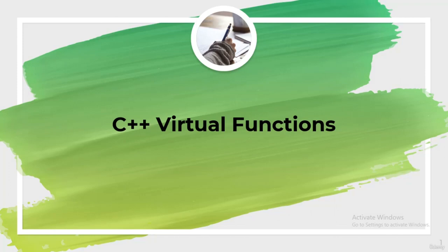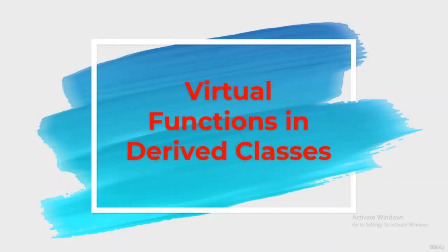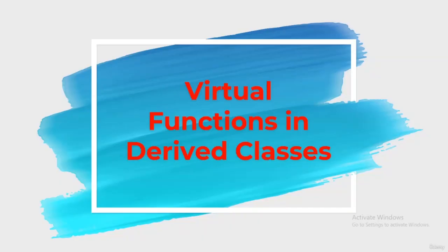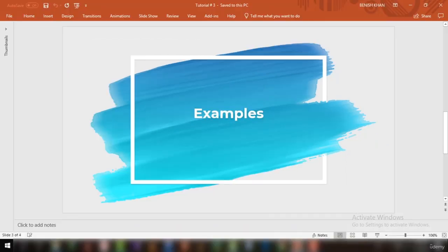Welcome to another tutorial on virtual functions. When virtual functions are declared virtual in the base class, it is mandatory to redefine them in the derived classes. The compiler creates v-tables for the derived class and stores the addresses of functions in it. If a virtual function is not redefined in the derived class, the v-table of the derived class contains the address of the base class virtual function. It is not possible for a function to exist but for its address to not be present in the v-table.